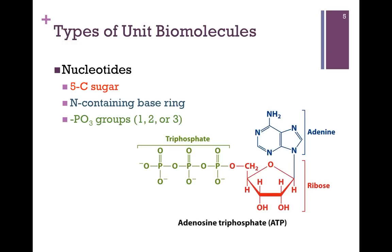Next, we have nucleotides — molecules containing three main components, as illustrated in our figure. A five-carbon sugar, highlighted in red, is at the heart of this molecule. In this case, it is ribose,